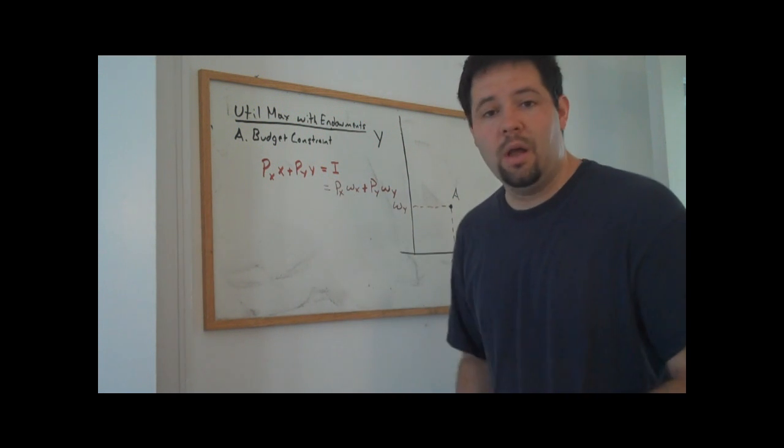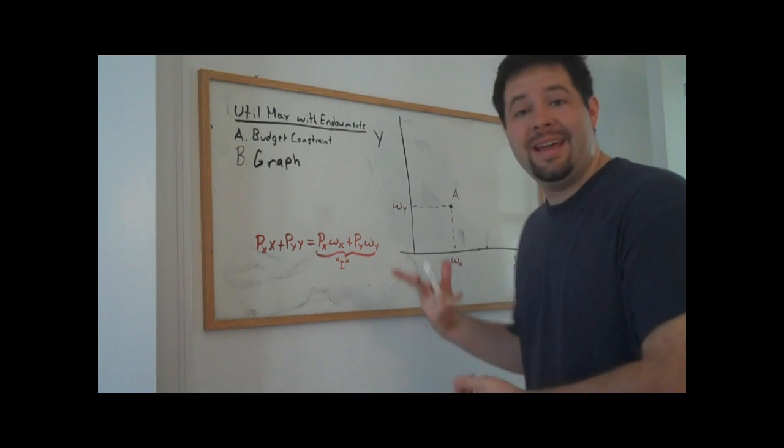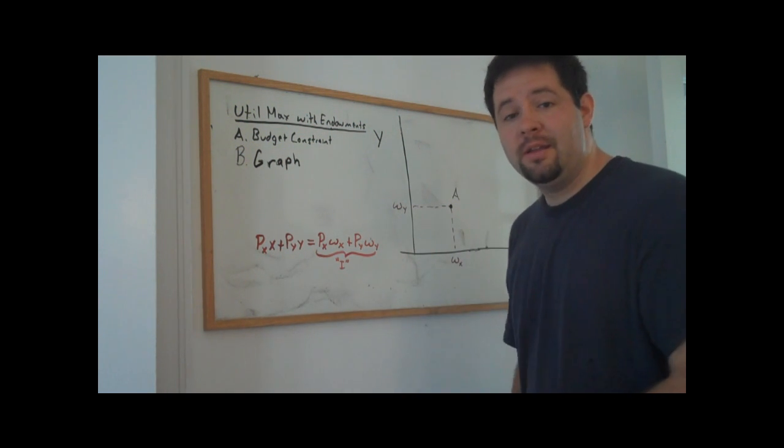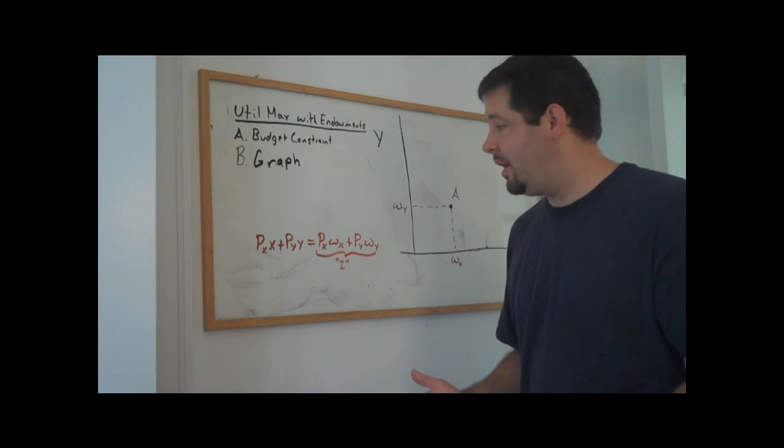If we connect the string of equalities, that's going to be our endowment economy budget constraint. As you can see, the budget constraint has the same form as before, it's just that now we have to figure out what income is for a given set of prices.